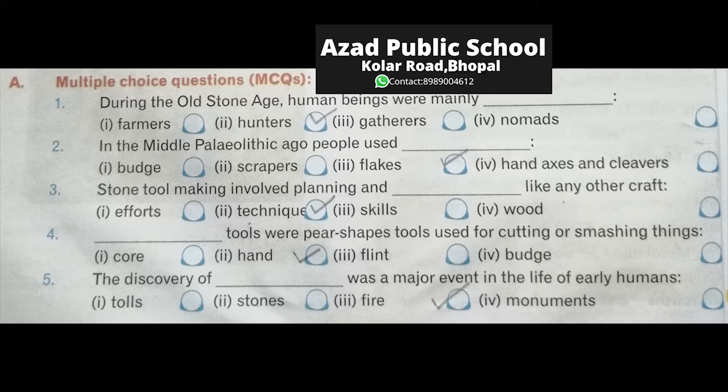Basically they were hunters — shikari. Second: in the middle Paleolithic age, people used flax — they used flax. Stone tool making involved planning and blank, like any other craft — technique. First plan, then technique.